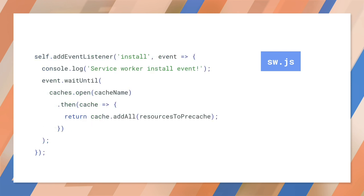Next, we use the Cache API to cache all those app shell resources during the service worker's install event, which is fired one time only when the service worker first executes. Caching during the install event ensures that the service worker will have access to all the files the app expects to use. Because if any of the files fails to cache, the addAll promise will reject, and the service worker won't install.